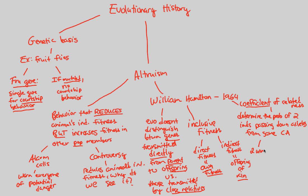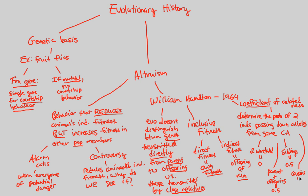In an imaginary scenario: two unrelated individuals have a coefficient of relatedness equal to zero. A parent and offspring are related by 0.5 — they share half of each other's genes. Not only are parent and offspring equal to 0.5, but siblings are also related by a coefficient of 0.5. Finally, cousins are quite closely related, but not as much as siblings — their coefficient is 0.125.